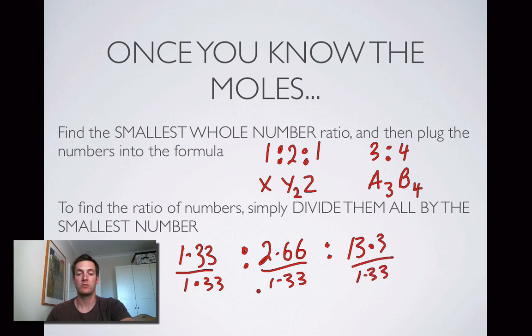It could be that you can just do these things in your head, and that's absolutely fine. But by dividing all the numbers that you're given by the smallest of those numbers, you'll find the whole number ratio.